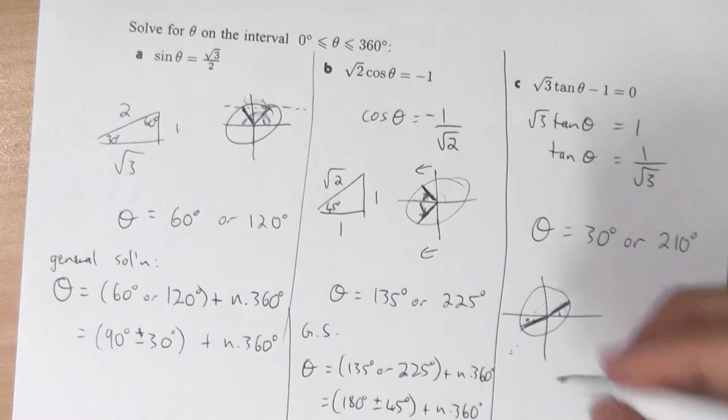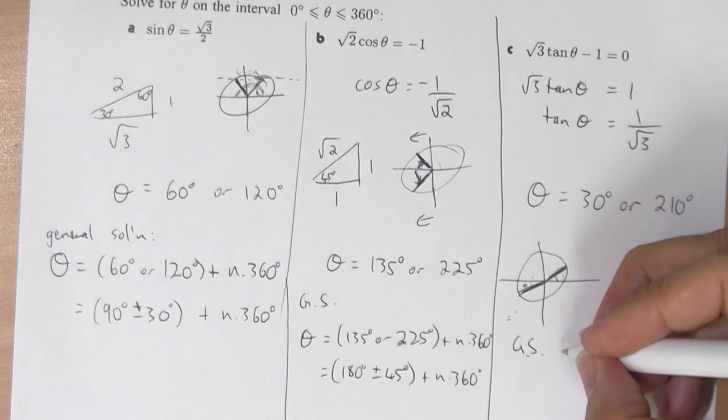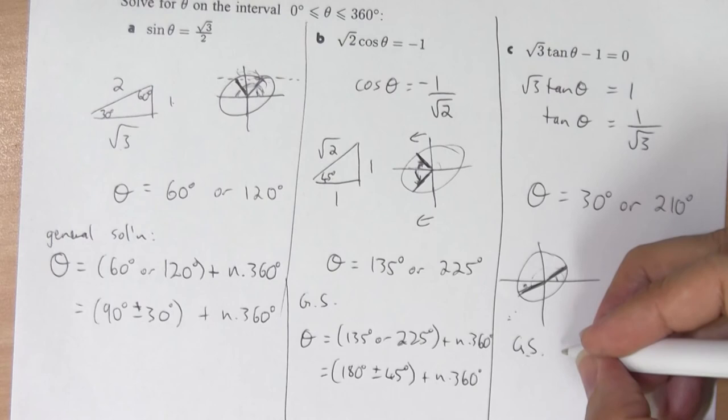My general solution for the tan is neat. We just go some number of 180 degrees plus 30 degrees. And this actually covers 30 and 210 and as many more as I like.